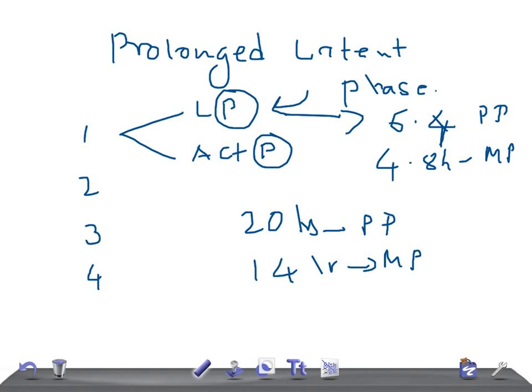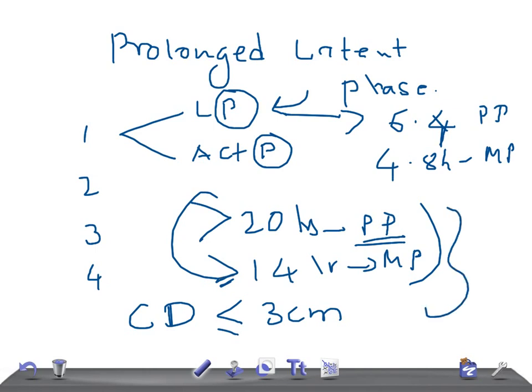Let's talk about prolonged latent phase. By definition, prolonged latent phase is when cervical dilation is less than or equal to three centimeters, the acceleration phase of dilation has not been reached, and the duration has extended more than 20 hours in primipara or more than 14 hours in multipara.